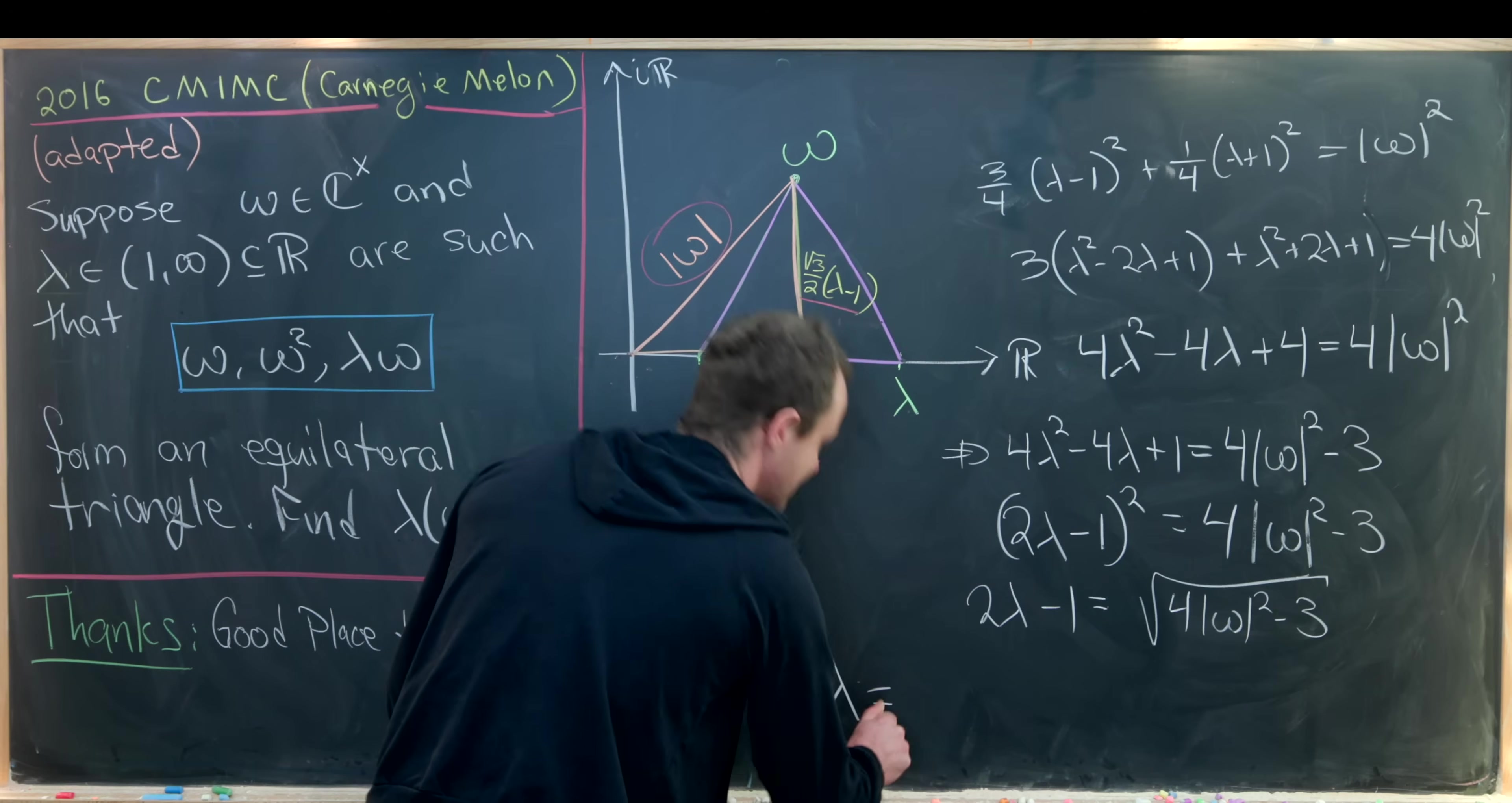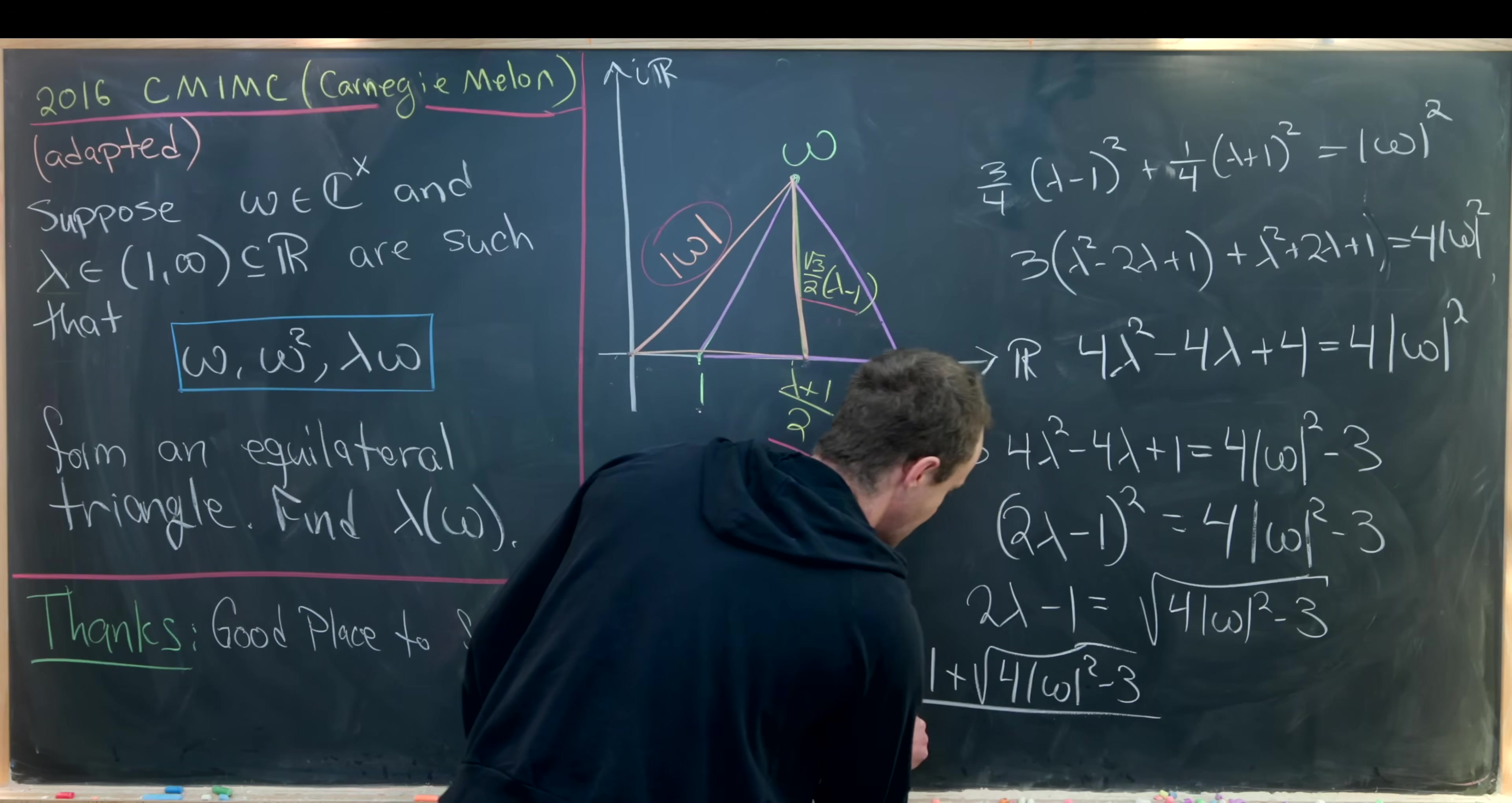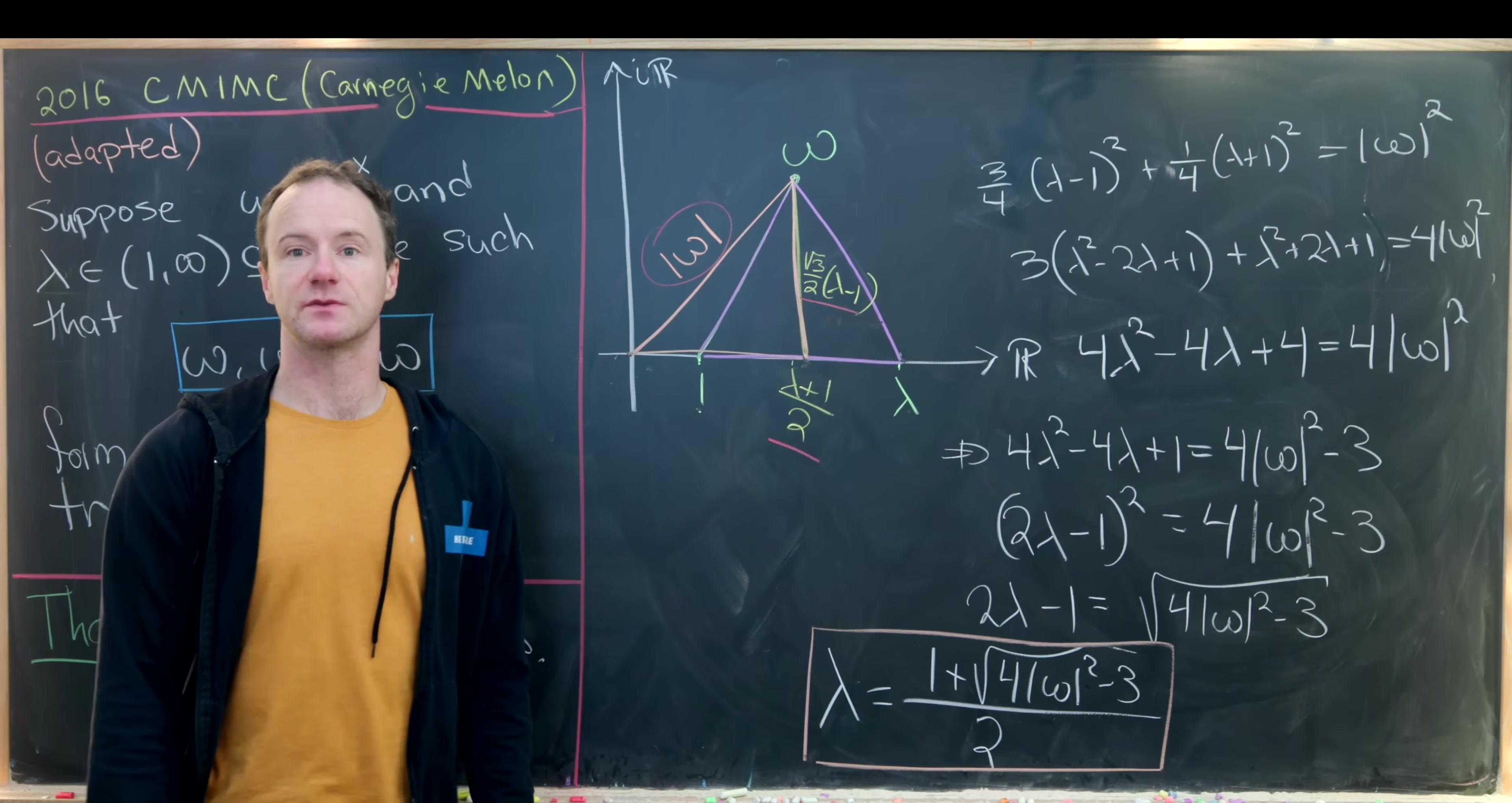So notice we get lambda equals 1 plus the square root of 4 times omega squared minus 3 all over 2. And that would be our expression of lambda in terms of omega. And that's a good place to stop.